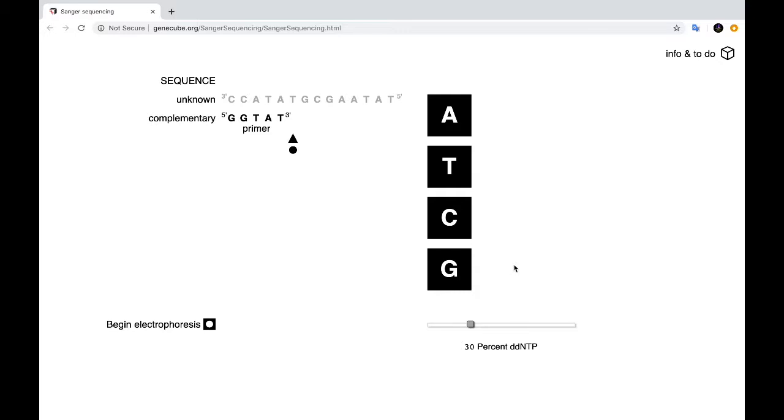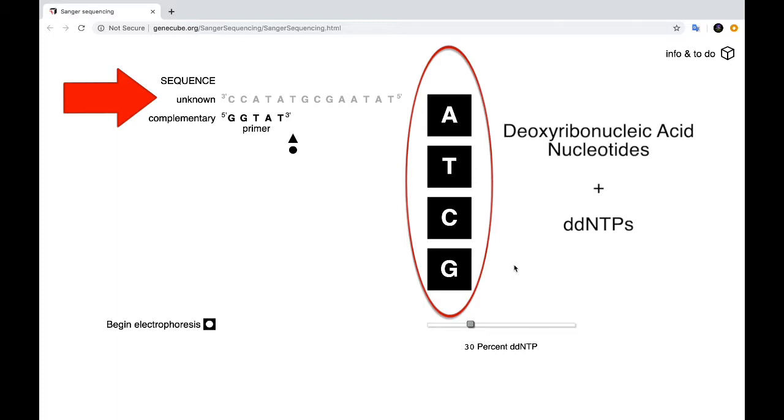So essentially, you're going to mix it all together, the unknown piece of DNA, the deoxyribonucleotides and the DDNTPs. And at the bottom, you have a slider for the percentage of DDNTP you wish to use.